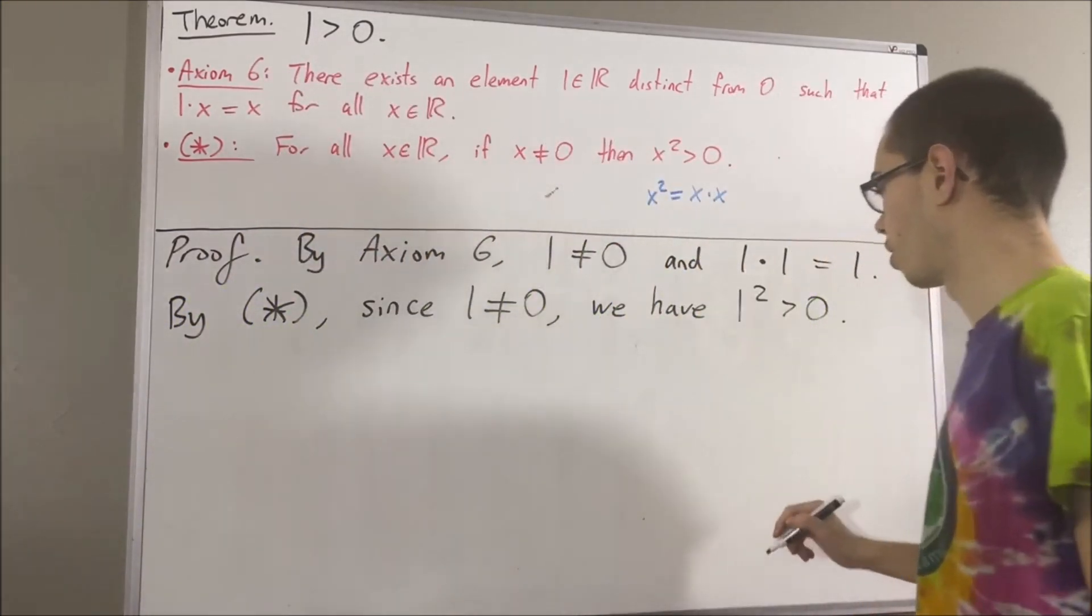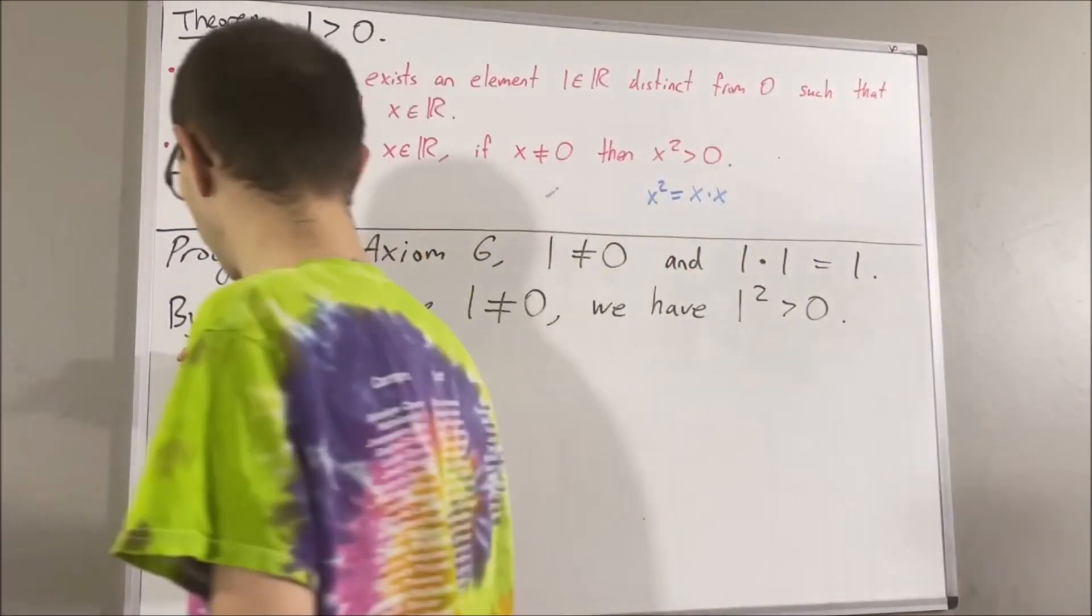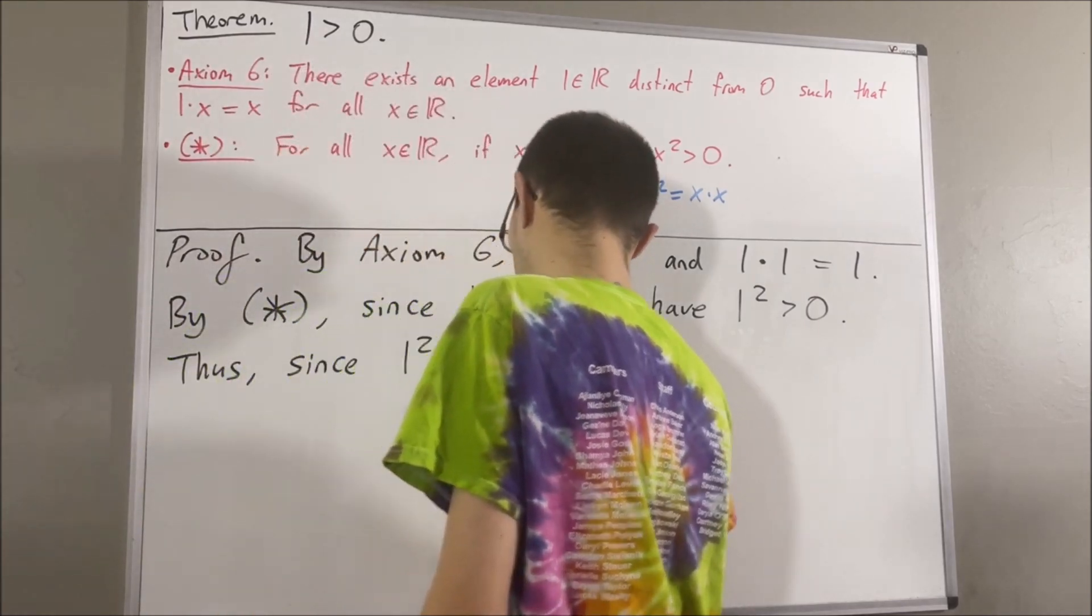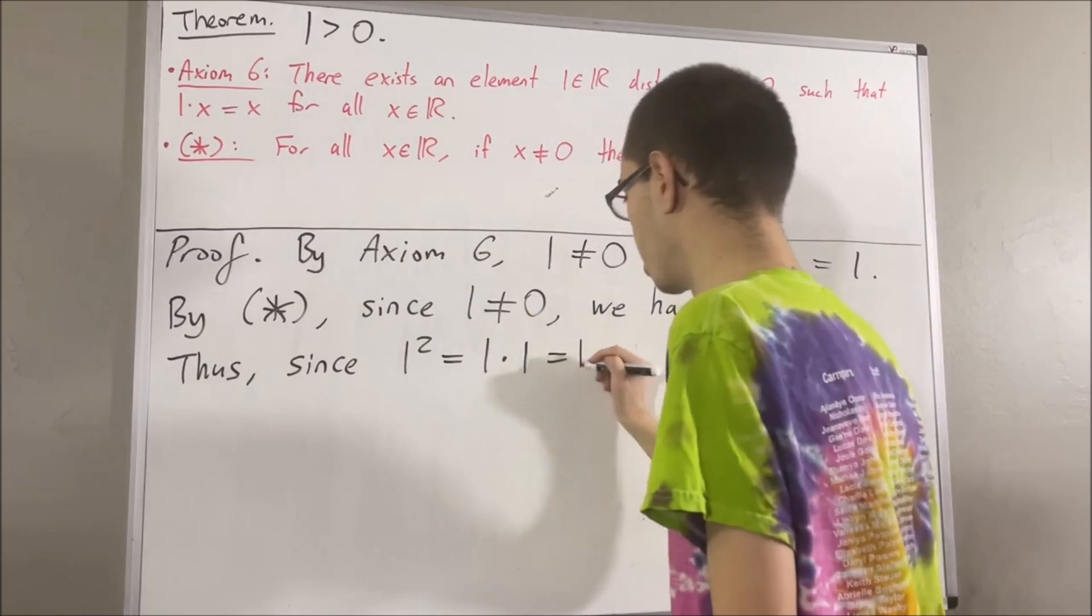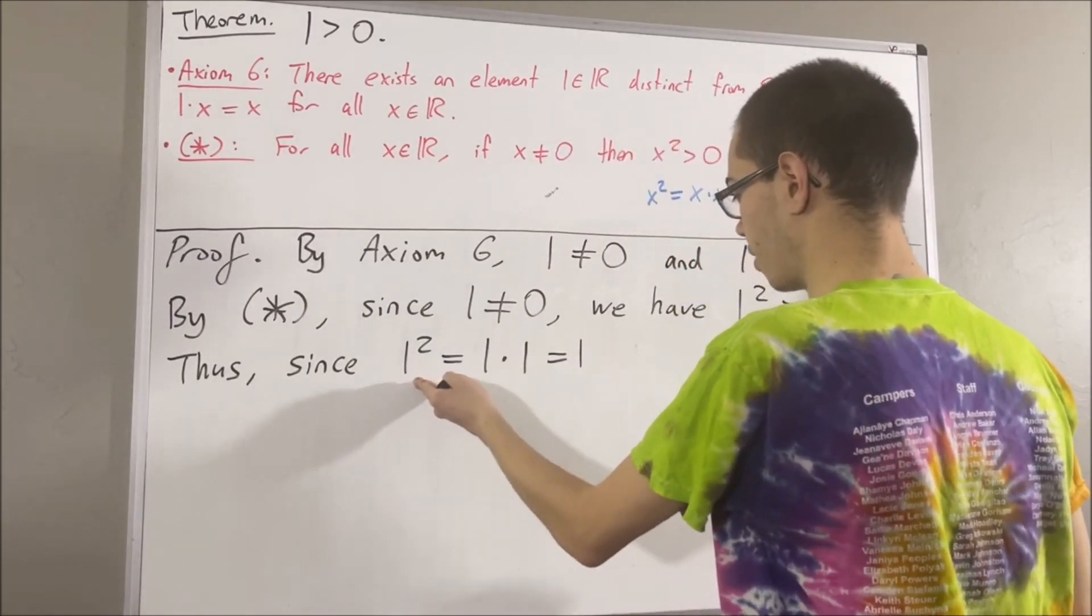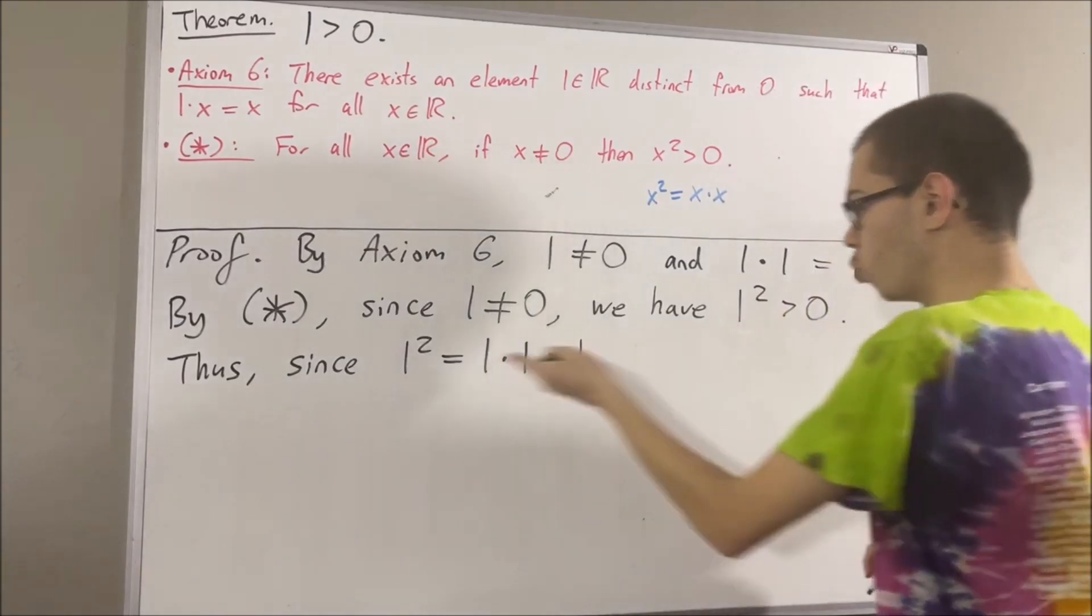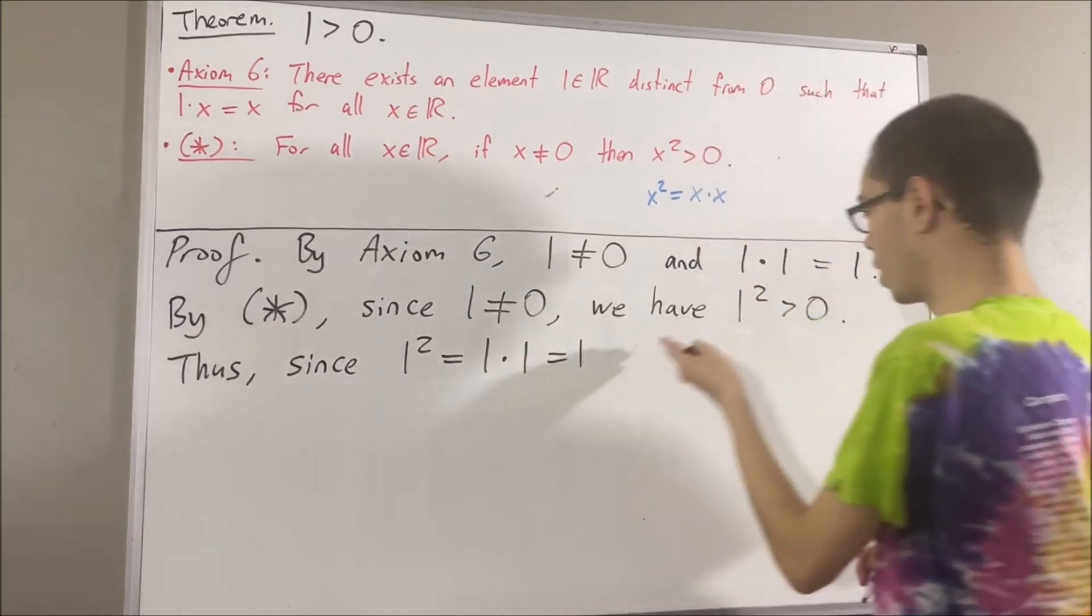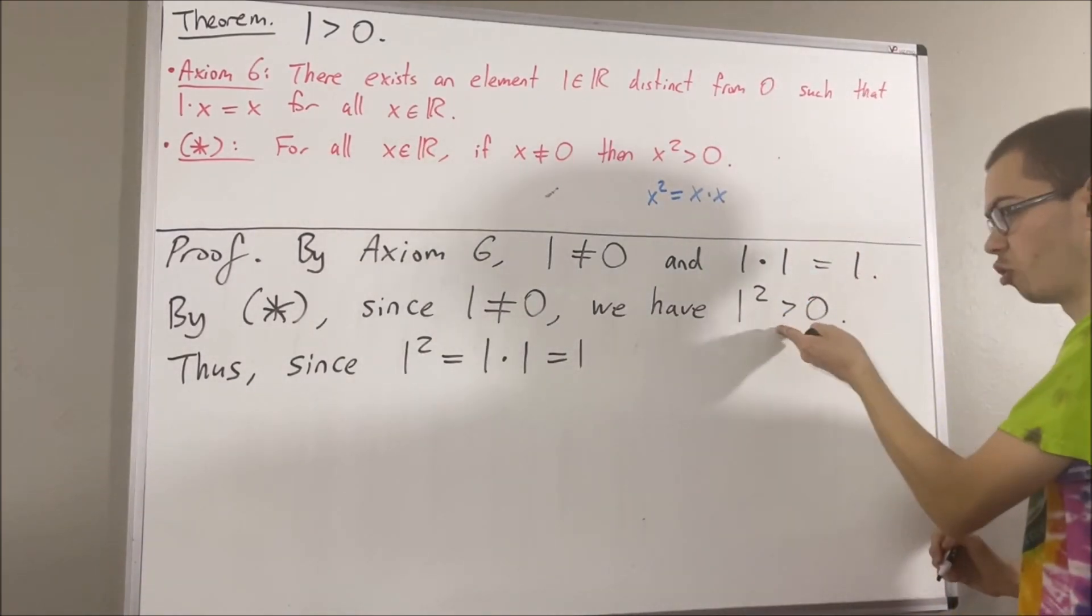But remember, 1 squared is just notation for 1 times 1. And we know 1 times 1 is equal to 1. So this tells us that 1 squared is equal to 1. Since 1 squared is greater than 0, and 1 squared is equal to 1, we can replace 1 squared with 1. So we have 1 is greater than 0.